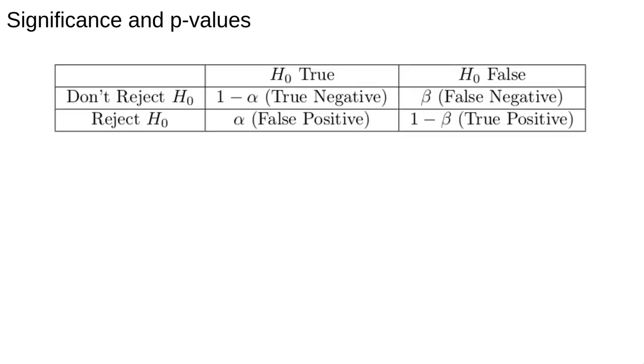The following table gives the probabilities of each of the four possible results of a hypothesis test. If the null hypothesis is true and we don't reject it, that is a true negative. If the null hypothesis is false and we reject it, that is a true positive.